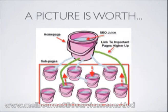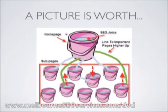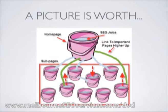A picture is worth a thousand words, and I think this will help explain how this linking structure works and how you should structure your website. Imagine this bucket as your home page — we've got our SEO juice at the top, that's our PageRank. These buckets down here are our sub pages, and these little lines represent links from our home page through to those sub pages. We're linking through to some pages that are important for navigation to help users get around the website, and also to those important, higher-converting pages.